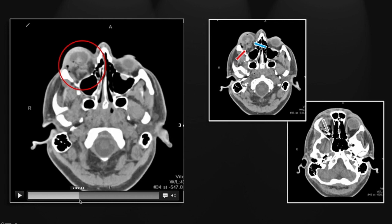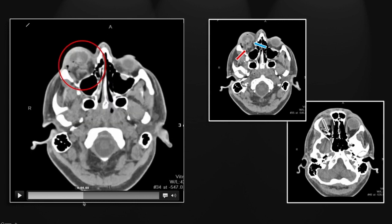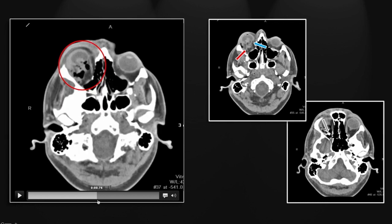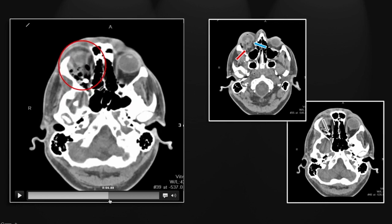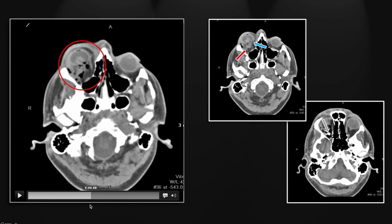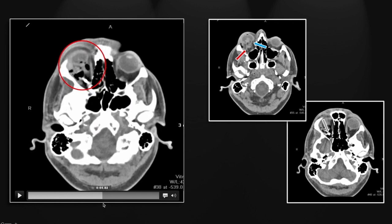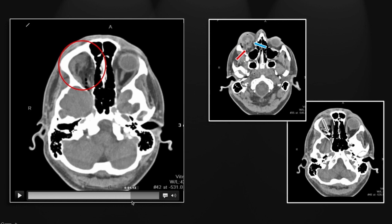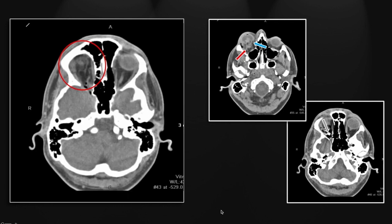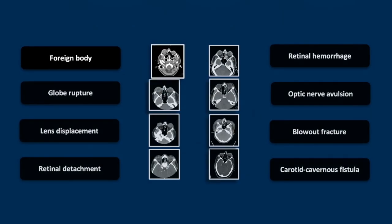You can appreciate the abnormal contour of the globe — it's not particularly subtle, although globe ruptures can be extremely subtle. Note the retrobulbar gas and hemorrhage and the posterior foreign body. That is the again obligate foreign body case.